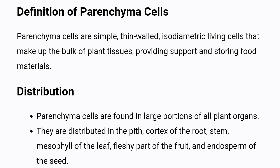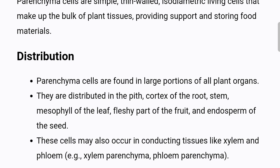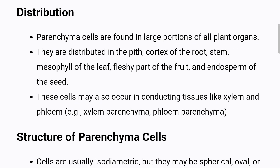Distribution: Parenchyma cells are found in large portions of all plant organs. They are distributed in the pith, cortex of the root, stem, mesophyll of the leaf, fleshy part of the fruit, and endosperm of the seed. These cells may also occur in conducting tissues like xylem and phloem.